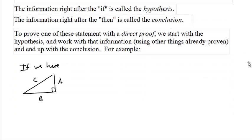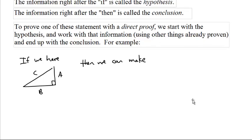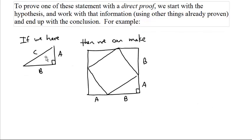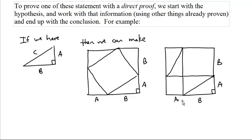For example, if we have a right triangle with sides a, b, and c, then we can make a big square with 4 of these triangles, 1, 2, 3, 4, around a big square on the inside. Or, we could make the same size square by putting 2 of the triangles here and 2 of the triangles there, leaving a big square like that.